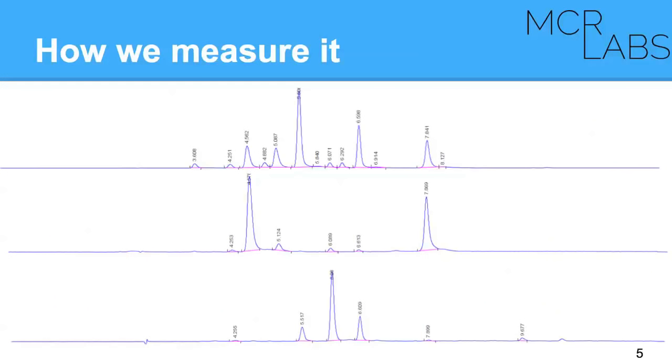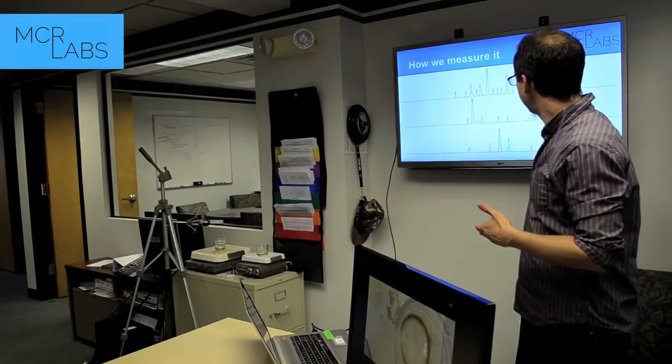This is another sample — a decarboxylated edible. We extracted all the cannabinoids from it and what you see is very little THCA and a whole bunch of THC. There's also a little bit of CBN creeping in. Why is there CBN? It's oxidized — THC gets oxidized and converted into CBN. Very often we focus on the reaction THCA plus heat gives you THC, but THC with heat also gives you CBN.